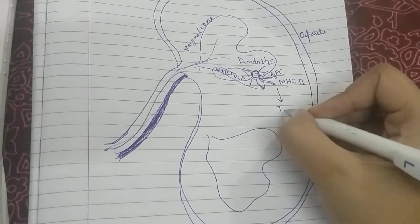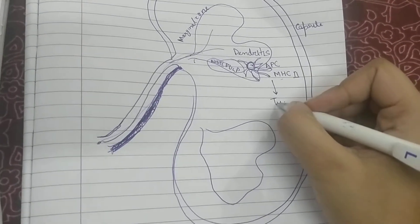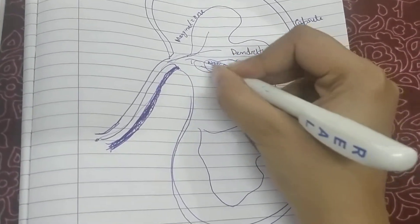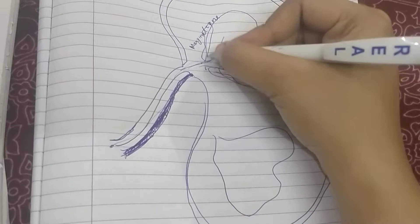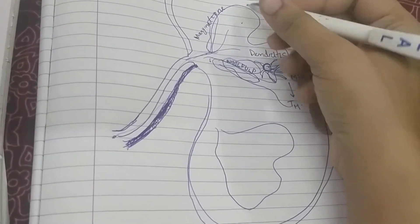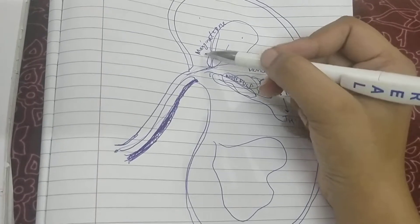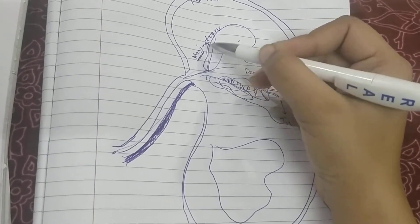The TH cells are activated. These TH cells migrate to the marginal zone. The marginal zone is between the white pulp and the red pulp, and the marginal zone is rich in B cells.